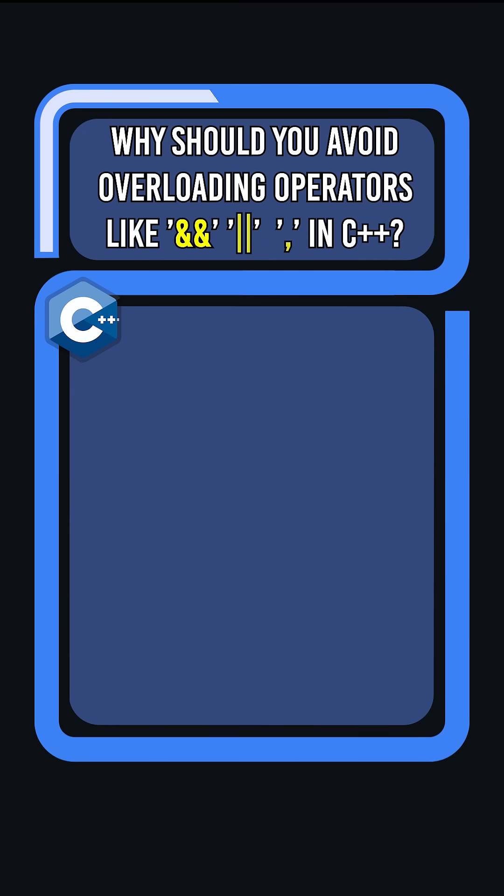Why should you avoid overloading operators like logical AND (&&), logical OR (||), and comma operator (,) in C++?